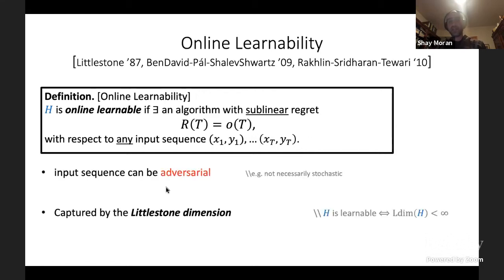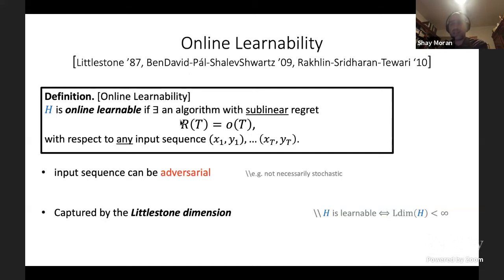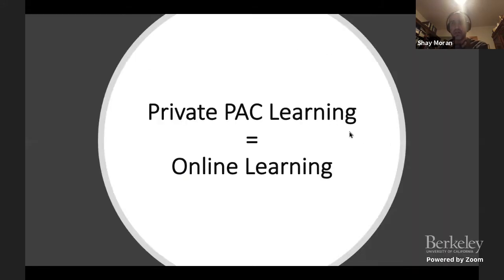The Littlestone dimension also determines the optimal regret bound. We've now defined private PAC learnability and online learnability, and we claim these are equivalent: a class H is privately PAC learnable if and only if it is online learnable.